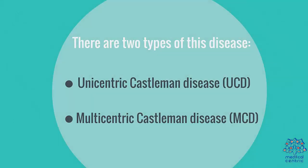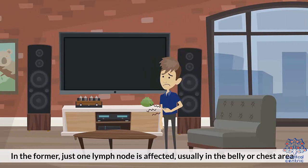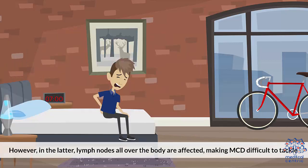There are two types of this disease: unicentric Castleman disease (UCD) and multicentric Castleman disease (MCD). In UCD, just one lymph node is affected, usually in the belly or chest area. However, in MCD, lymph nodes all over the body are affected, making MCD difficult to tackle.